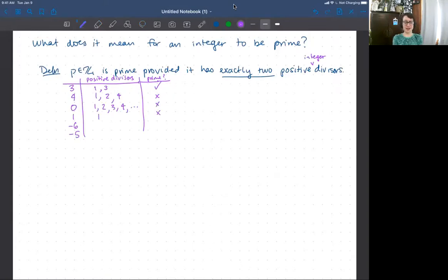Six. Sorry, negative six. What are the positive divisors of negative six? Well, two and three and one and six. One, two, three, and six. That is a list of four things. Four is not two in the integers. So not prime. And how about negative five? Negative five factors as one times negative five or negative one times five, which gives me exactly two positive divisors. So negative five, just like five, is going to be a prime.